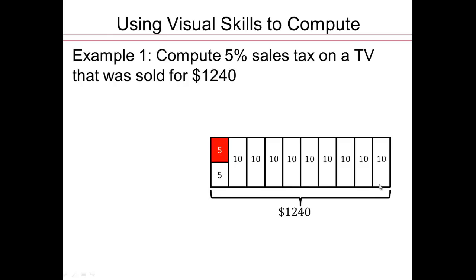This whole amount is 1240. So each box represents 1240 out of 10. Why is that? Because everything is broken in, there's 1, 2, 3, 4, 5, 6, 7, 8, 9, 10 boxes. So each box is $124. Now if you look over here, I want $124 out of 2. Why? Because I only want half of it. So that would be $62.